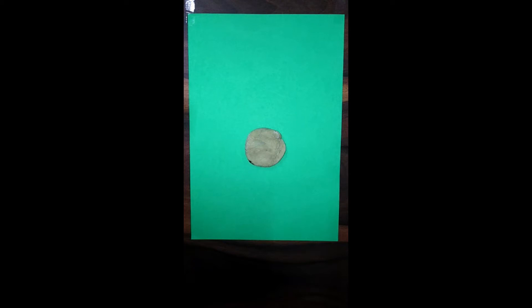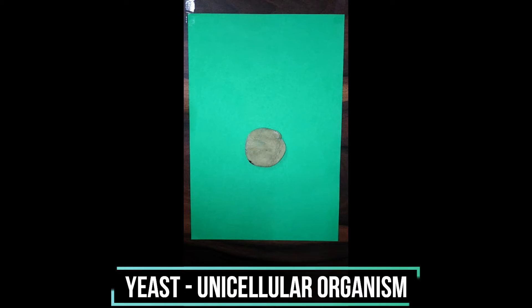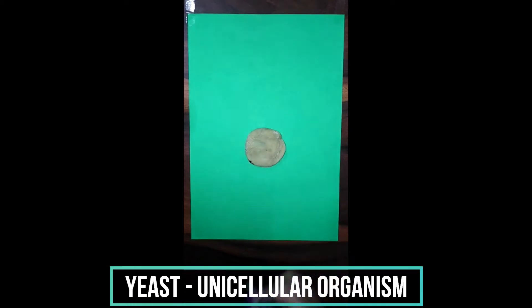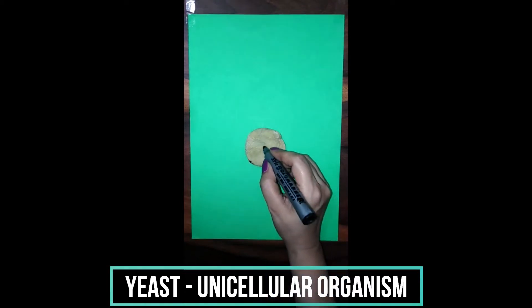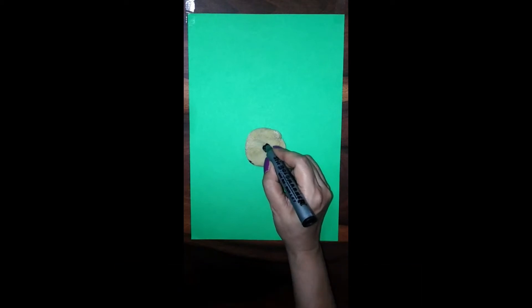Asexual reproduction in yeast. Yeast is a unicellular organism. So let us suppose that this is a yeast, and since it is a unicellular organism, we can consider this as the nucleus which is present in this unicellular organism.